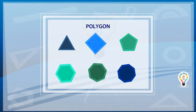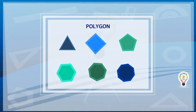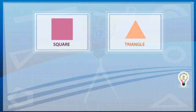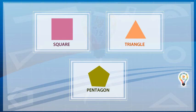As we know that polygons are closed figures made up of only line segments. Thus, all polygons such as square, triangle, pentagon, etc., are examples of rectilinear figures.